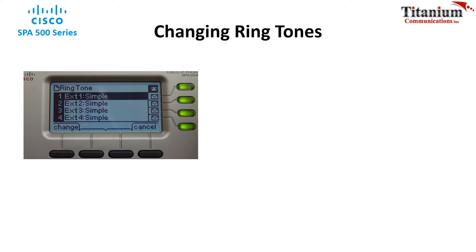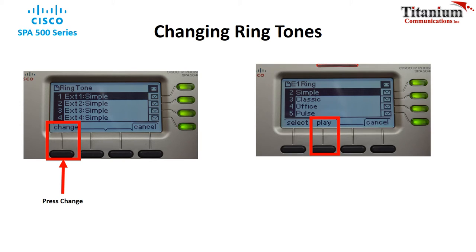Select the line that you would like to change the ringtone for and press change. Using the joystick, scroll down to the ringtone you would like. Press play to sample the ringtone and press select to change the ringtone.